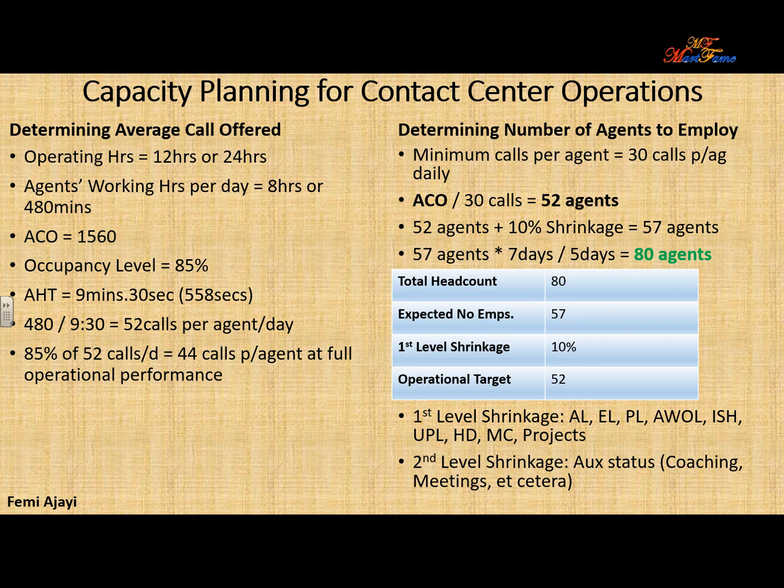Now that we know the normal working hours for each agent, which is 480 minutes, divide that by the AHT — that will give you 52 calls per agent per day. Now, it's impossible for an agent to be taking call after call, so that is why we set the occupancy level. 85% of 52 gives you 44 calls per agent per day at full operational performance.